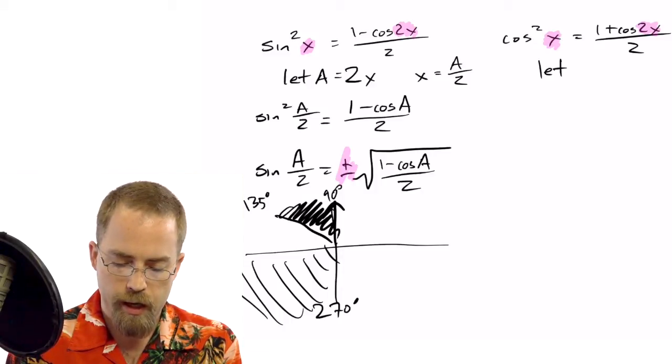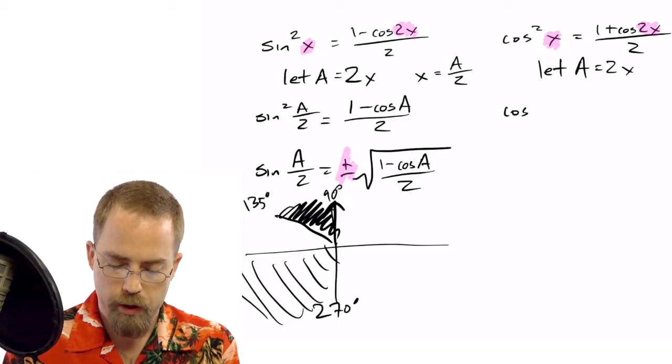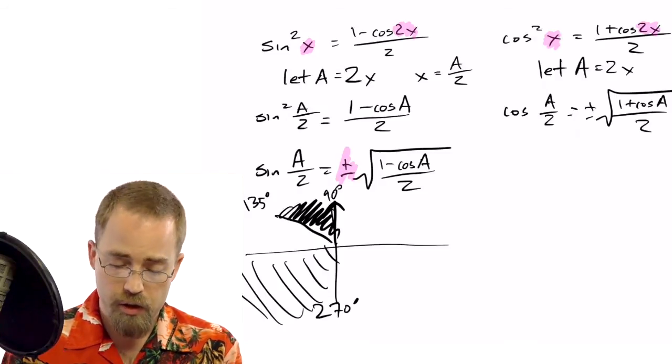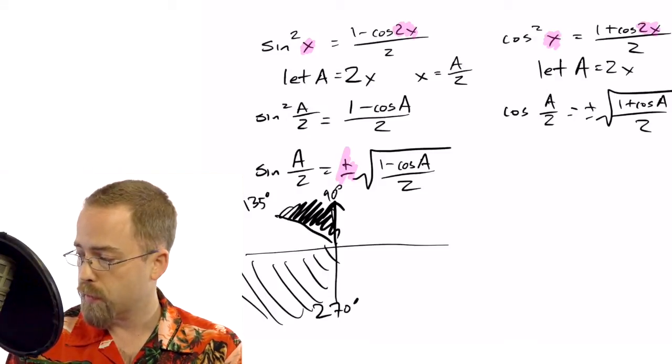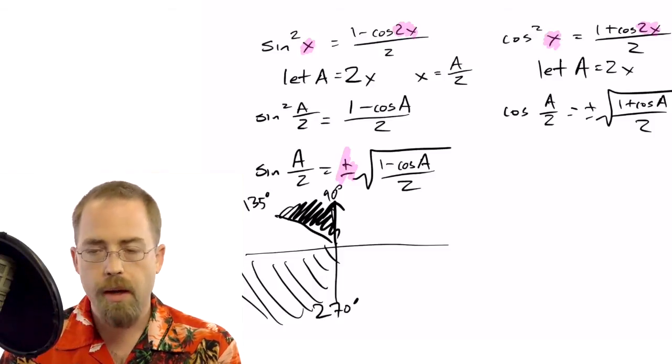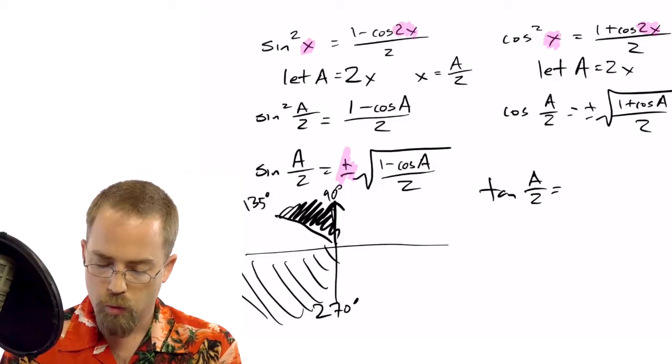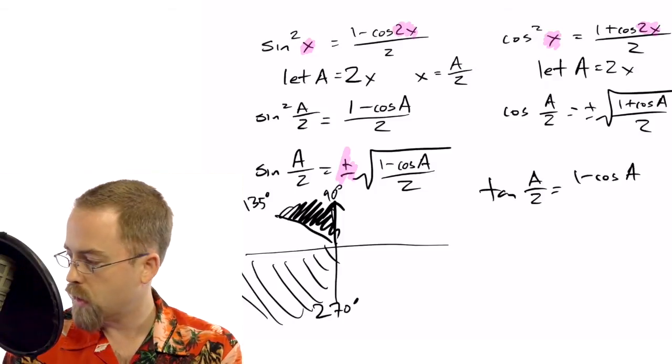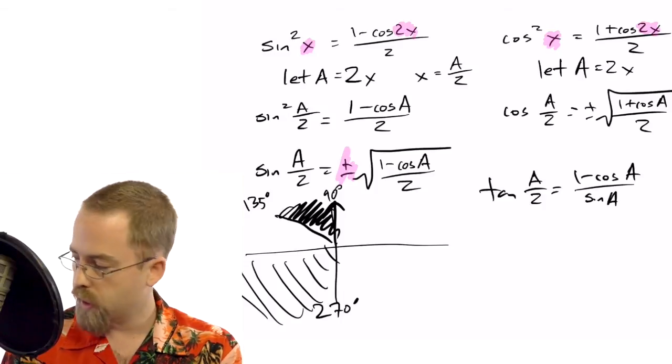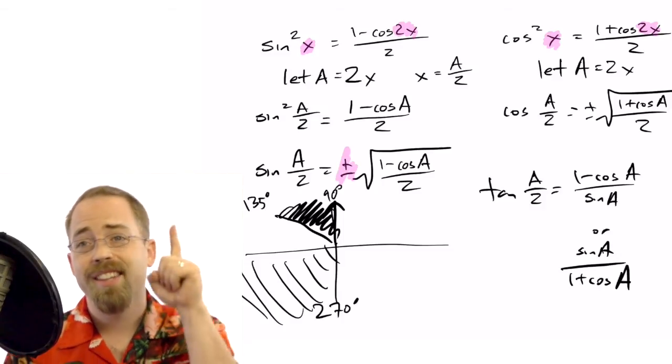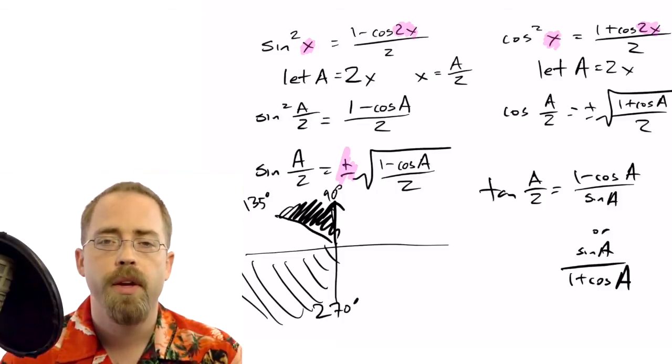Same thing over here. We can let A equal 2x, and we will get cos squared A over 2 equals plus or minus square root 1 plus cos A over 2. Oops, I just did the square root. And that's the cosine half-angle formula. Now, the tangent half-angle formula is a little bit more arbitrary. You could stack these on top of each other. But if you do that and you juggle trig identities around, you'll get that the tangent half-angle is 1 minus cos over sine, or it is equal to sine over 1 plus cos. So, again, I've got a song for you to be able to learn these half-angle formulas. I hope you like the Beatles.